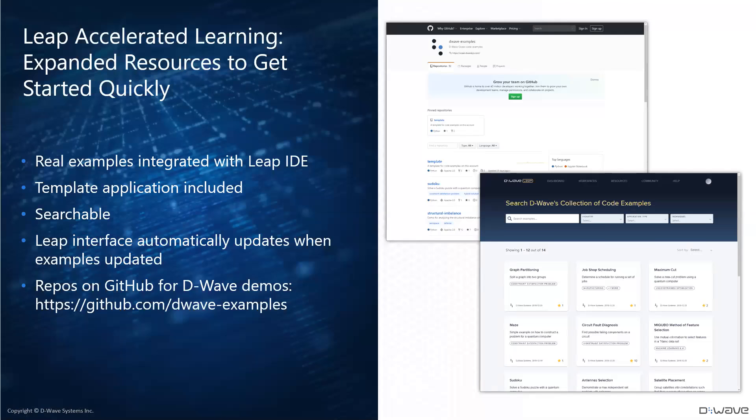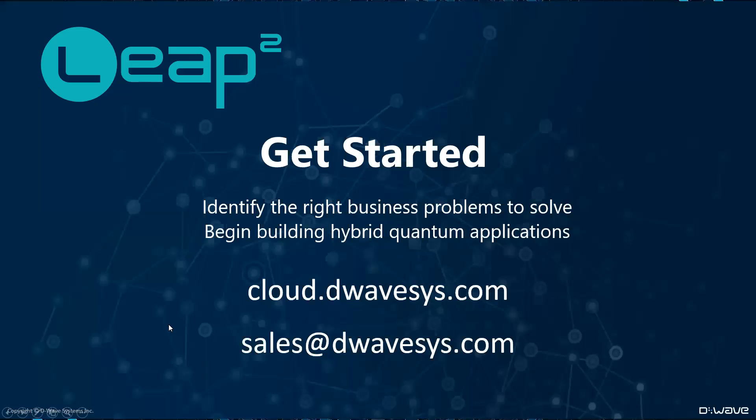You can also find many real examples and templates in Leap 2 that can help you get started. You can easily explore examples using integrated development environment. There's a searchable database that allows you to look at specific type of applications that you have in mind and explore a lot of options. So with that, I would like to encourage you to get started today. Sign up for Leap 2. It's free and you get one minute of free access to a quantum annealing processor. One minute is a lot.